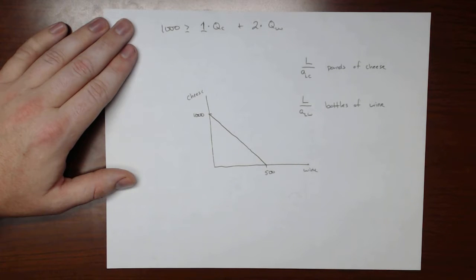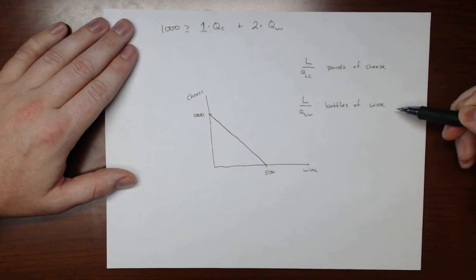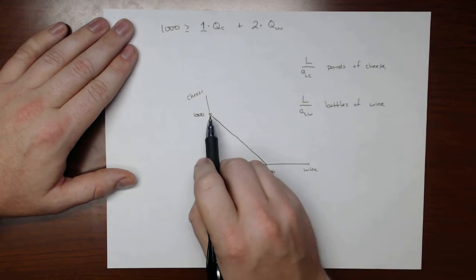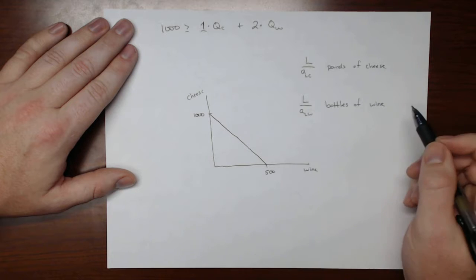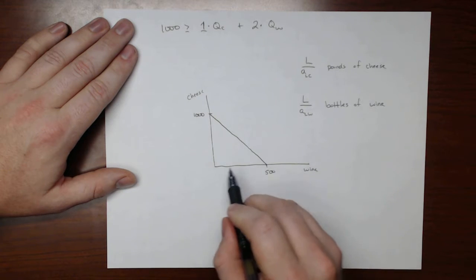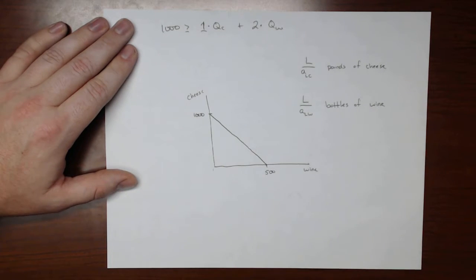So another way to frame this is that we can produce L over ALC pounds of cheese at most, and L over ALW bottles of wine. And if we do that, we will maximize our production of either cheese or wine. In this case, we can produce 1,000 pounds of cheese and zero bottles of wine or 500 bottles of wine and zero cheese, or any linear combination between the two.